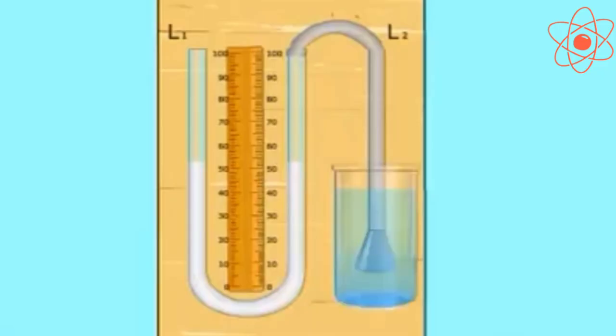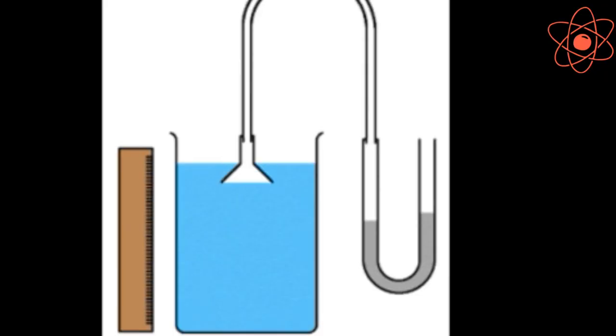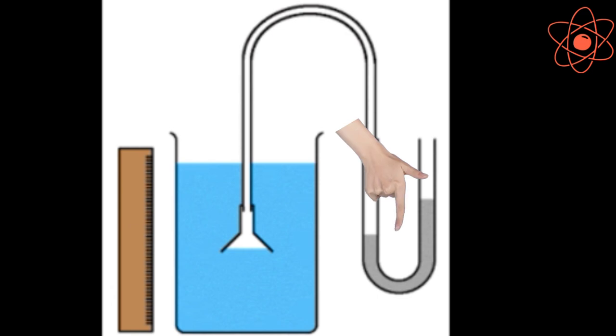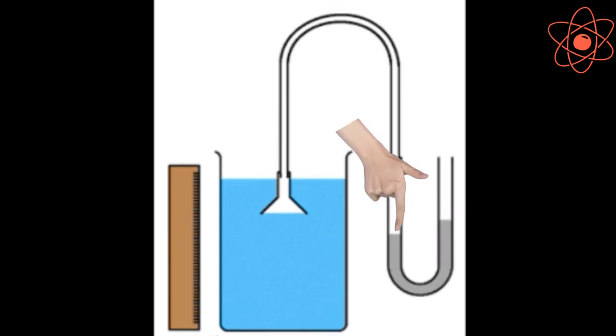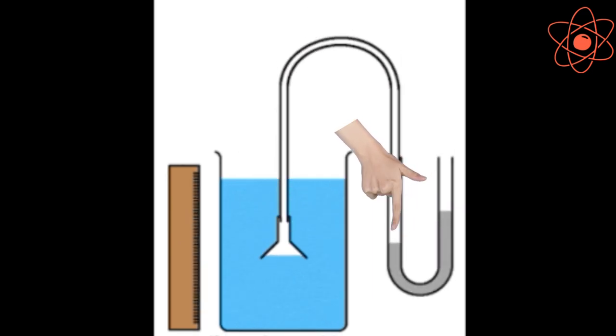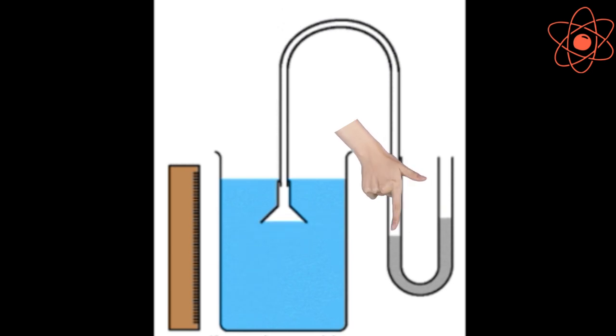Take a large glass jar full of water. Slowly lower the funnel into the water. As the funnel goes deeper and deeper into the water, the differences in the liquid level in the u-tube goes on increasing.